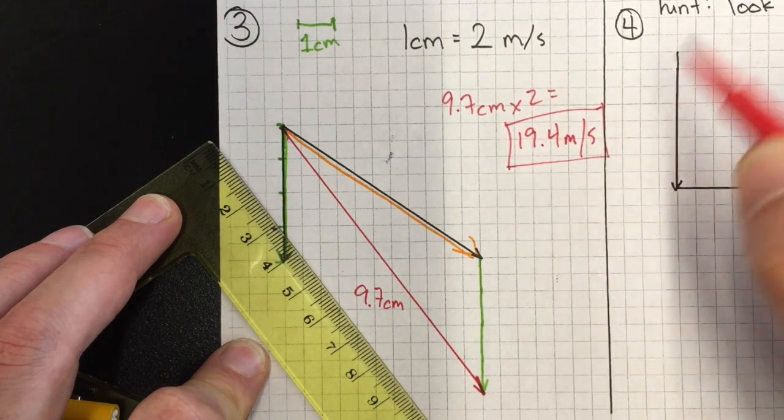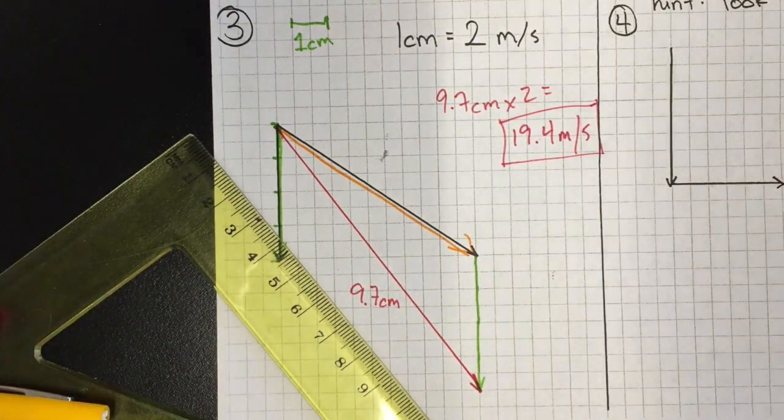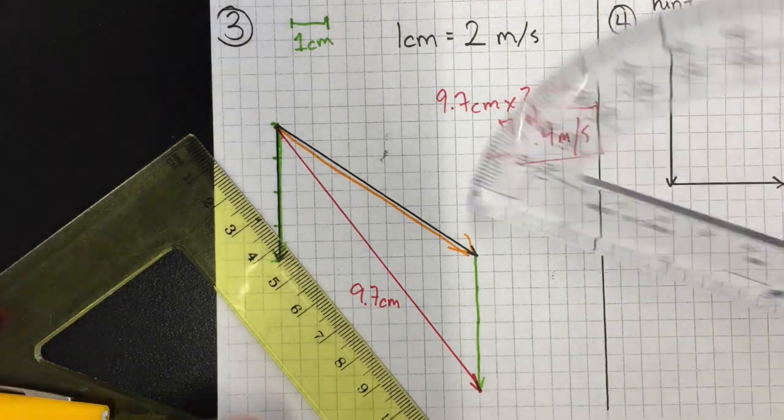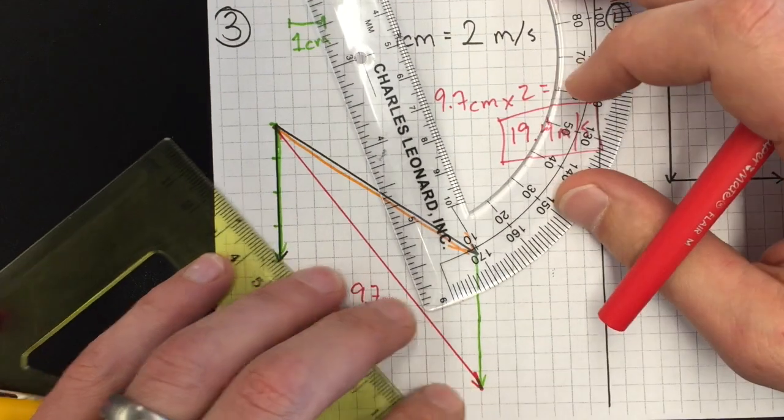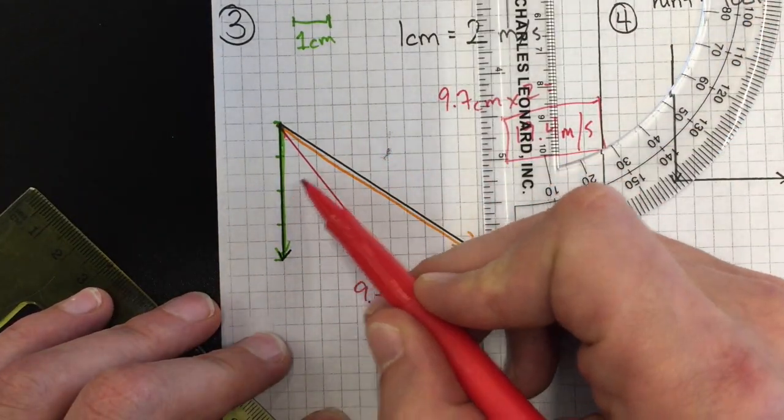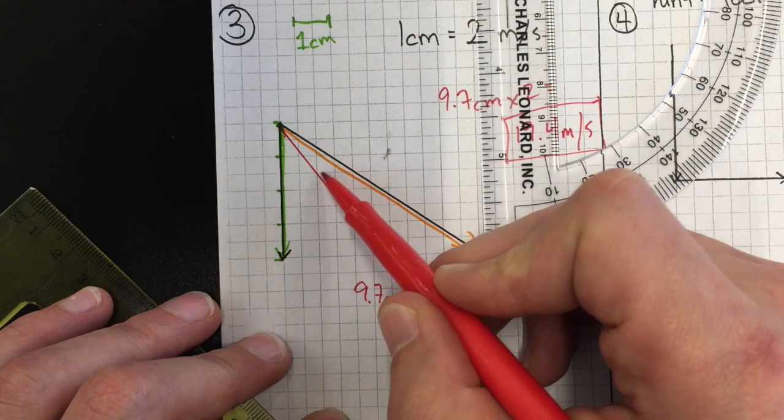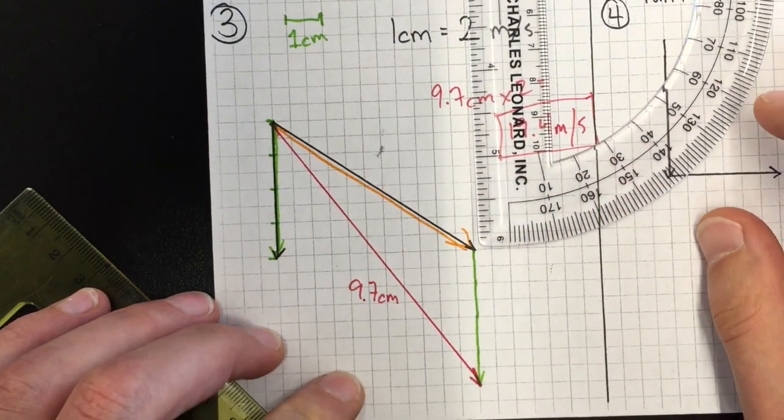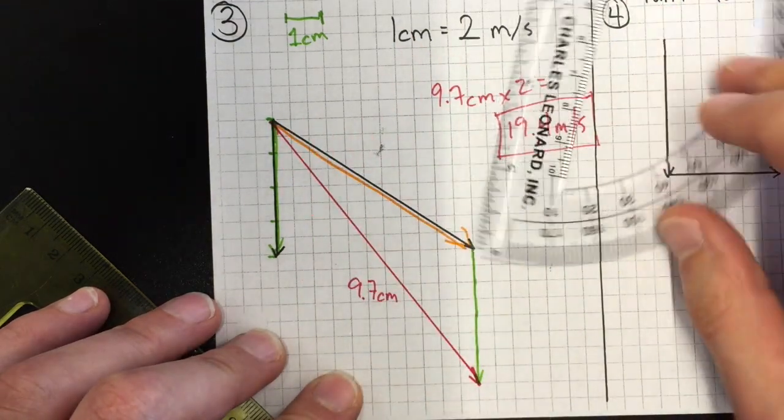What's our angle? We can grab a protractor and we're going to measure the angle. There's a lot of angles here - there's an angle between the green and the red, there's an angle between the red and the orange, but we measure all of our angles in physics from the x-axis.